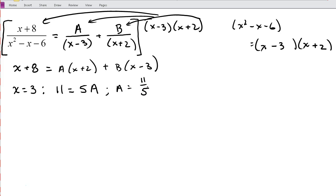And then a convenient value for x would be negative 2 because then my first term over here would cancel out. So plugging in negative 2, I've got 6 is equal to negative 5b, which means that b is going to be negative 6 fifths.